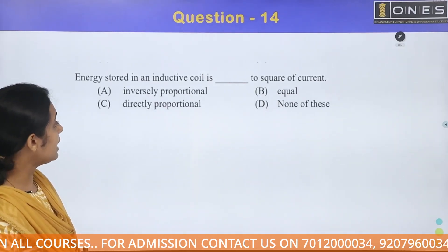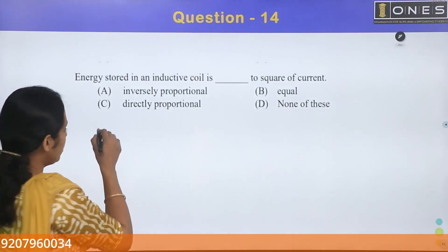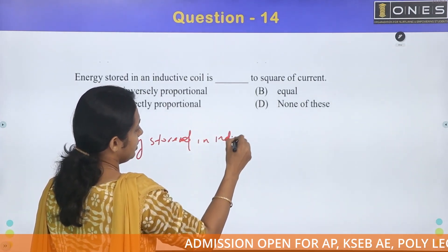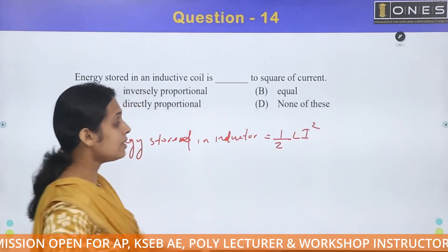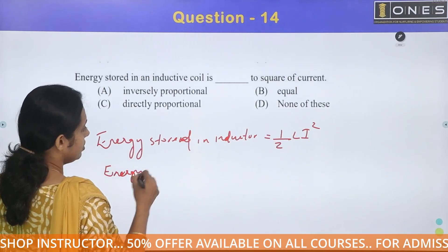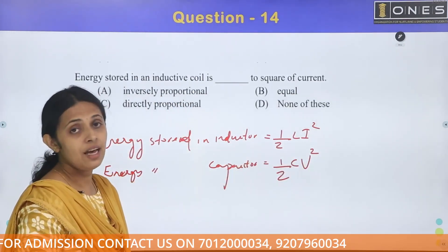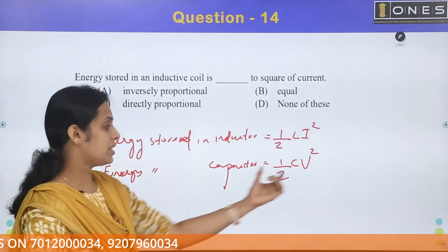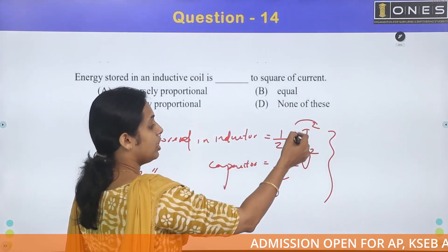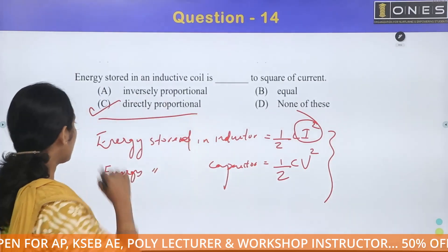Next: the energy stored in an inductive coil is proportional to the square of current. Energy stored in an inductor is equal to half into L times I squared, where I is the current flowing through the inductor and L is the self inductance. This is directly proportional to the square of current. Option C is the answer.